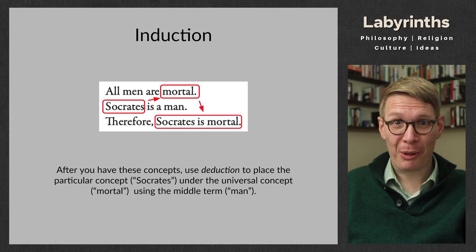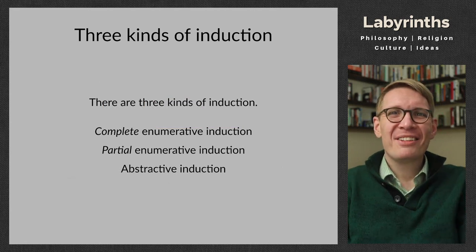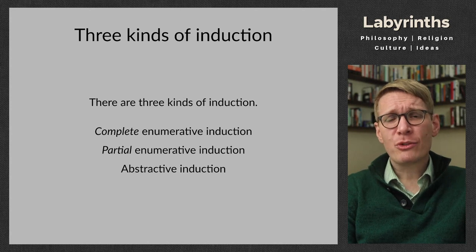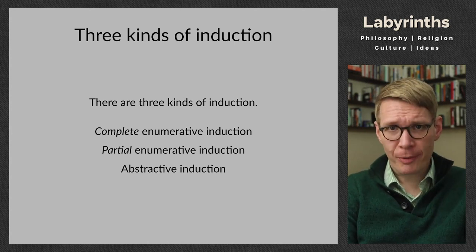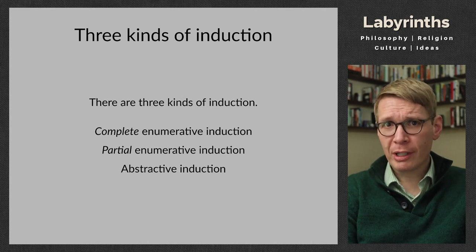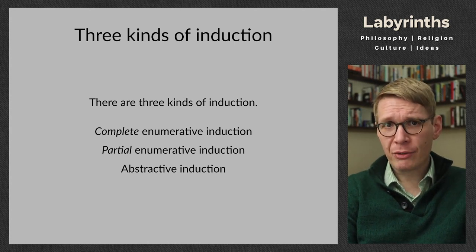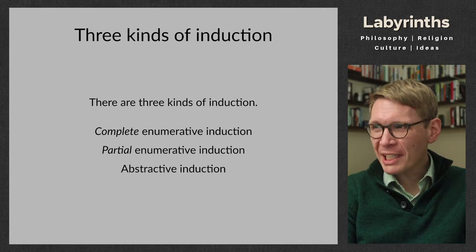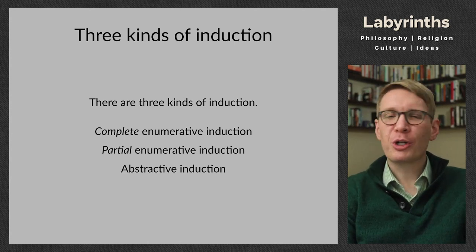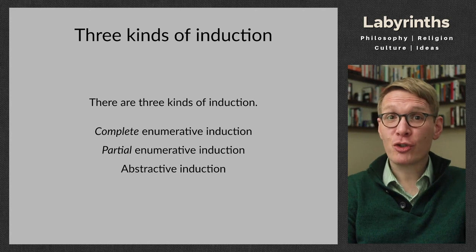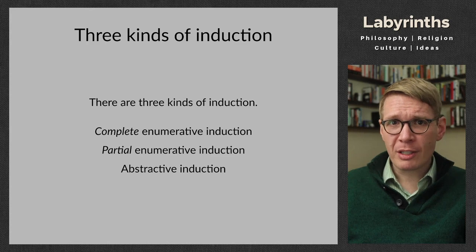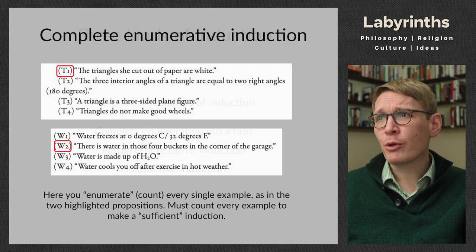So how do we get these general concepts, and how do we get these judgments about reality? We got them by induction. And as Hauser helpfully outlines, there are three kinds of induction — complete enumerative induction, partial enumerative induction, and abstractive induction. Sorry for all those syllables, but the concepts these terms refer to are pretty straightforward.